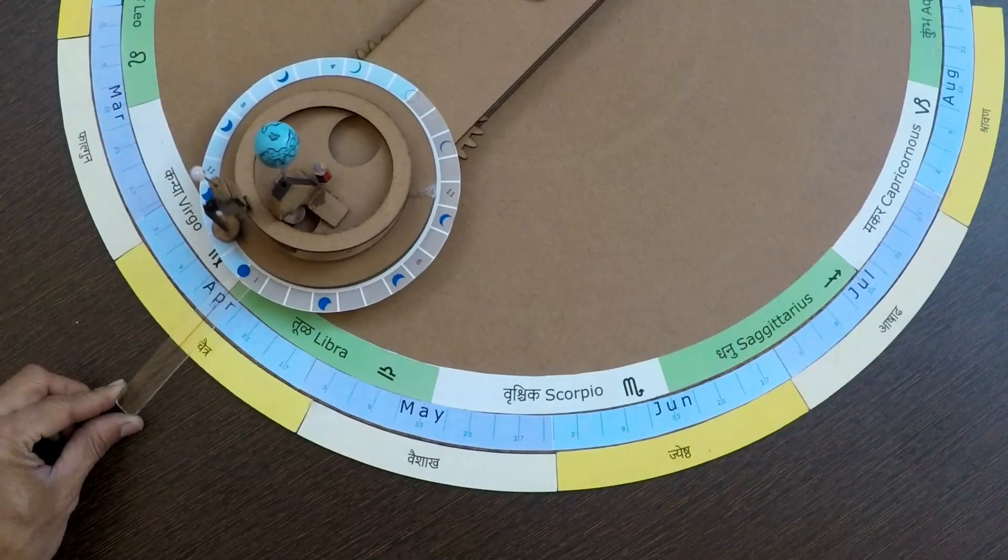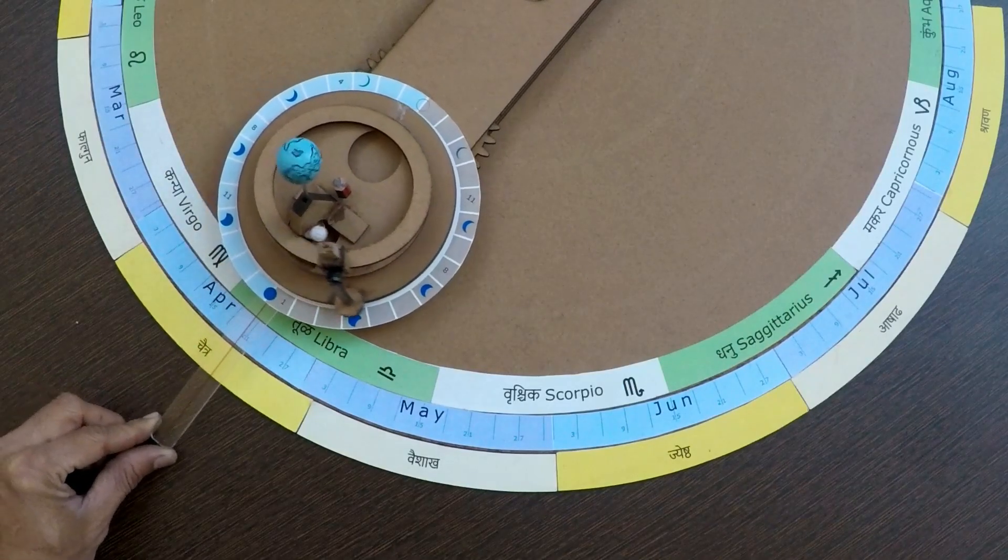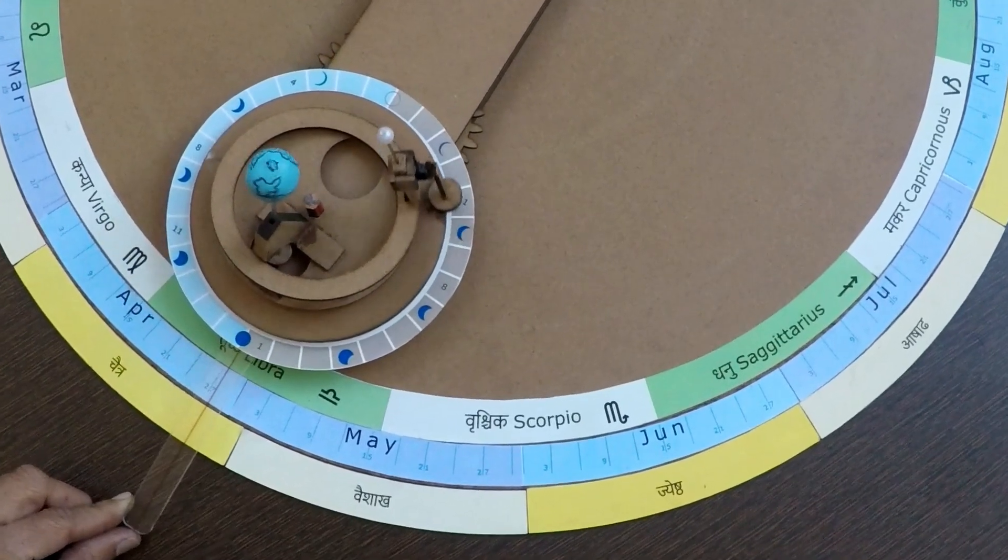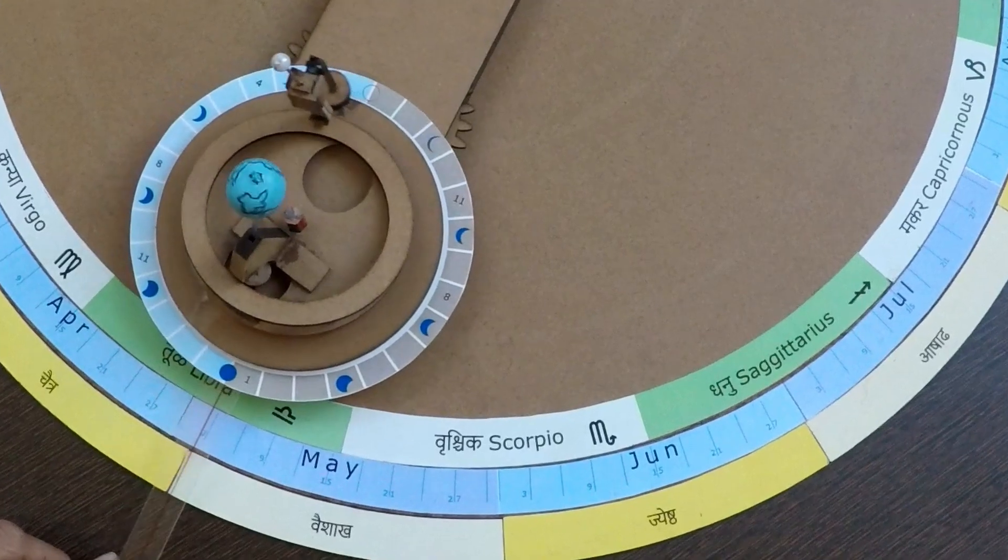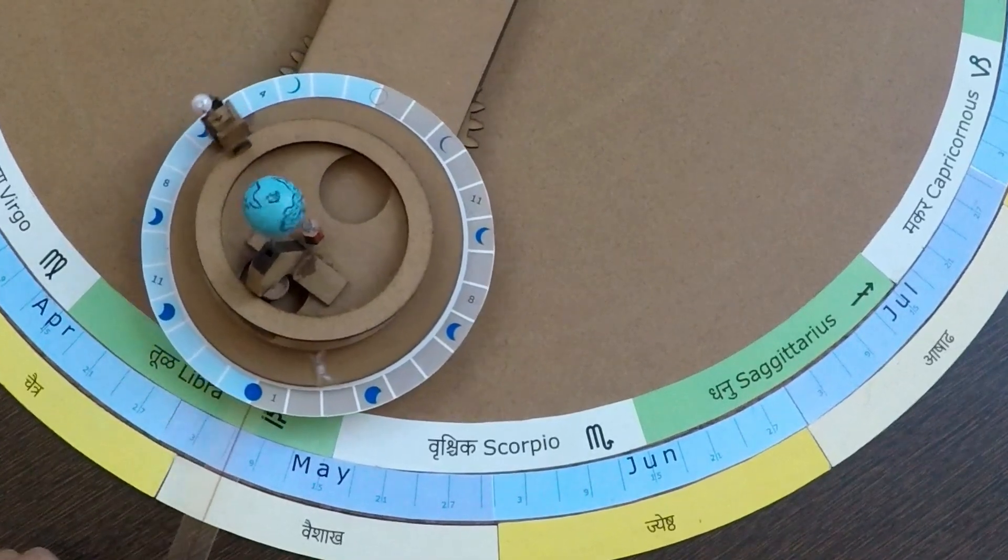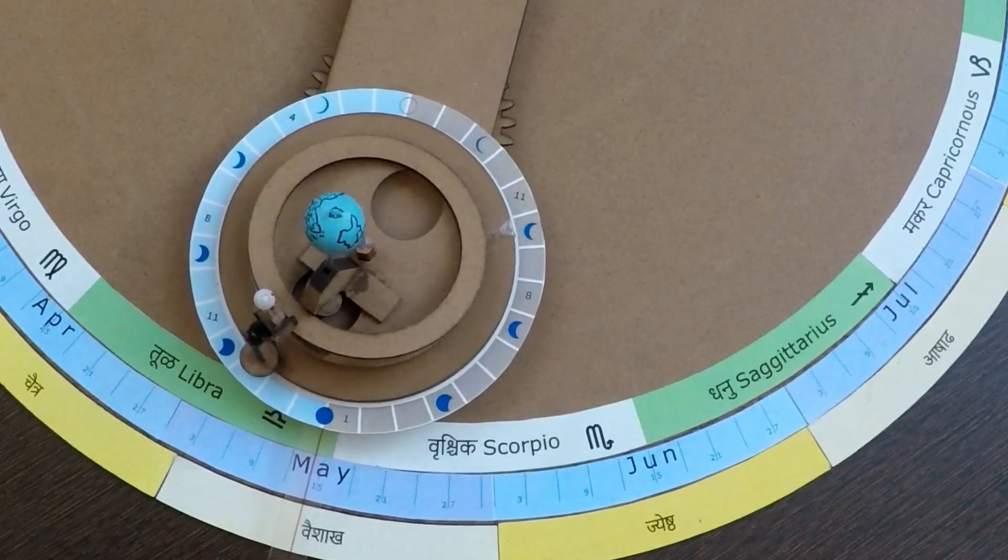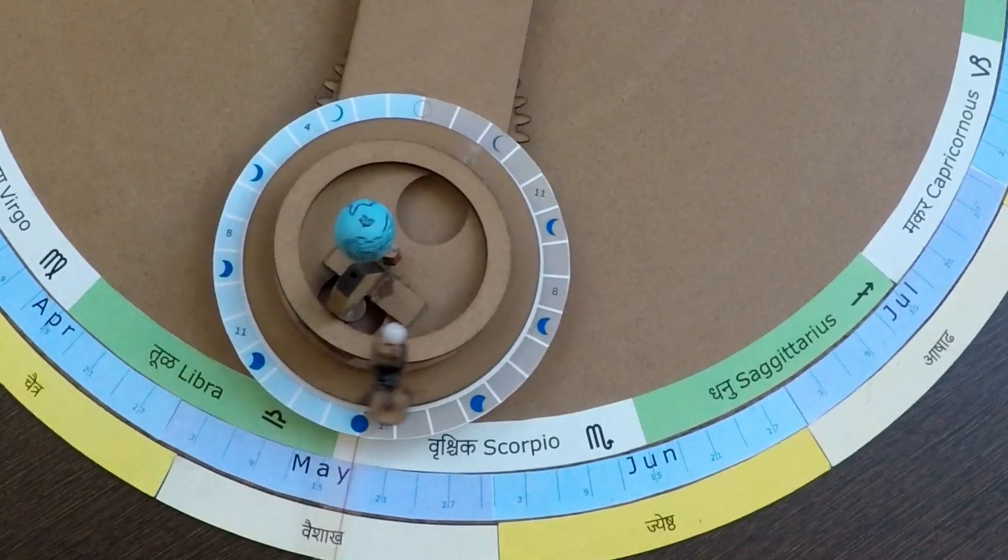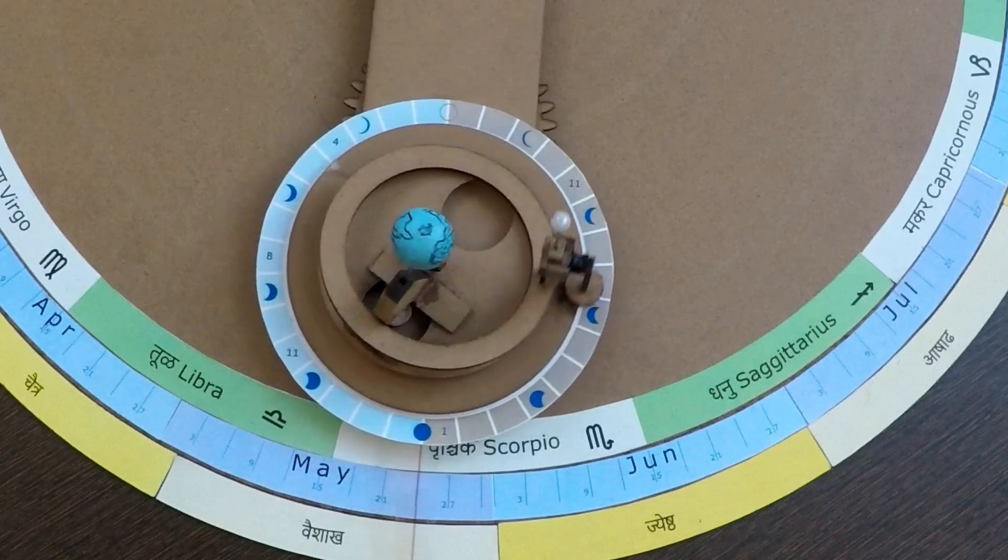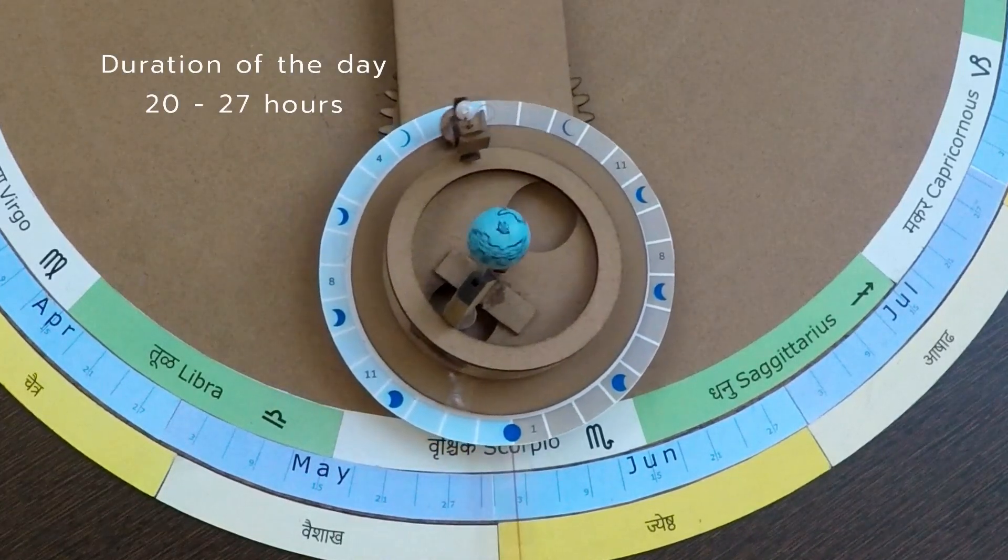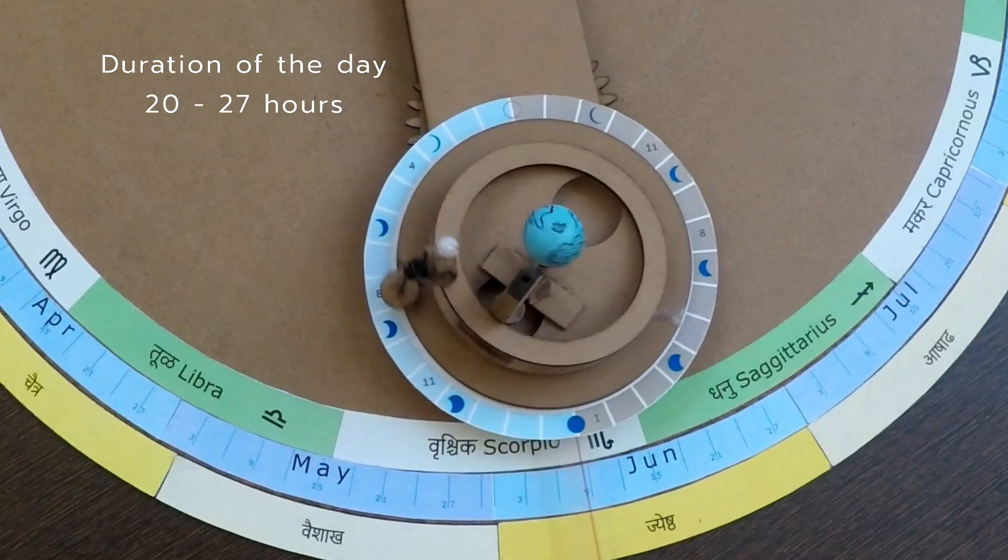Due to elliptical orbits of moon as well as the earth, speed is different at different locations. Sometimes moon takes more time to cover 12 degrees while at other times it takes less. This is the reason duration of a single day or Tithi varies in Hindu calendar. It fluctuates between 20 to 27 hours approximately.